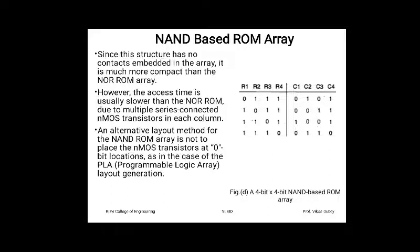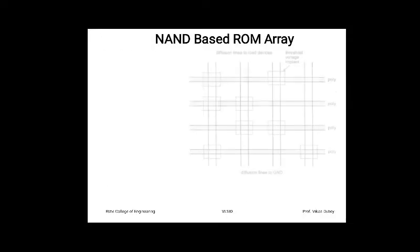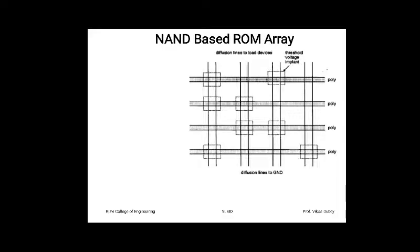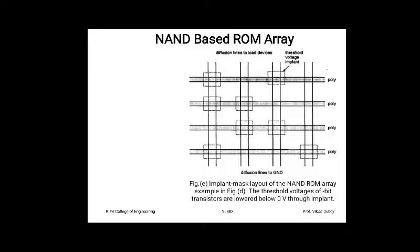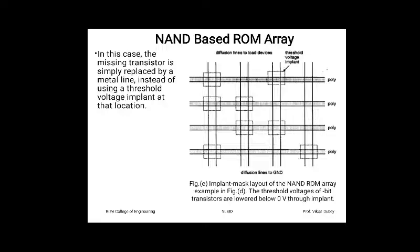An alternative layout method for the NAND ROM array is not to place an NMOS transistor at 0-bit locations, as in the case of PLA programmable logic array layout generation. In this layout, vertical diffusion lines are connected to ground and horizontal lines are polysilicon, so no metal contacts are required. In the implant-mask layout, the threshold voltage of a bit transistor is lowered below 0V through implants; alternatively, the transistor is simply replaced by a metal line instead of using a threshold voltage implant.